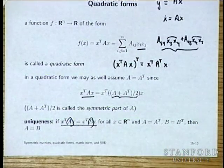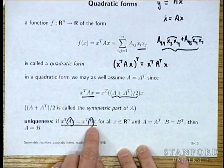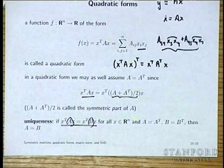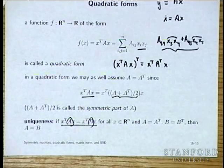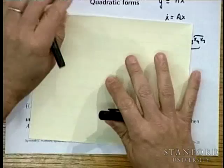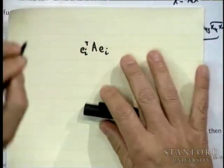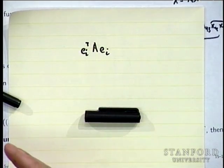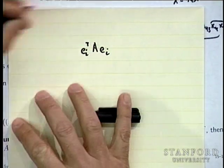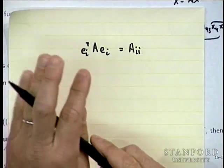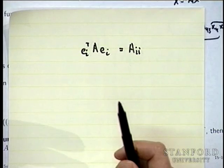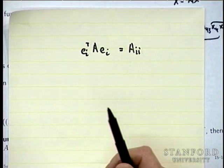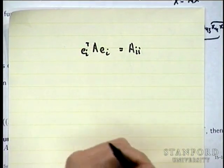If we have two symmetric matrices A and B such that X transpose AX equals X transpose BX for any x, we want to show A equals B. Plugging in x equals e_i gives e_i transpose A e_i, which equals A_{ii}. So if two quadratic forms agree for all x, the diagonals of those two matrices must be the same. To show that A_{12} equals B_{12}, you plug in e_1 plus e_2.